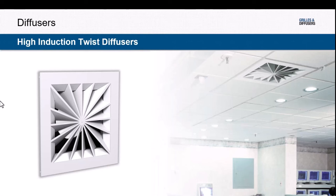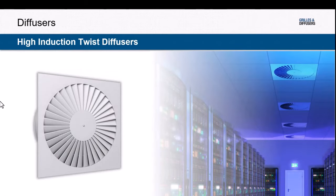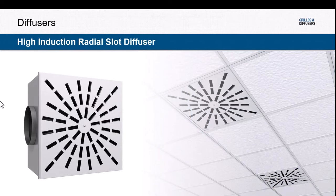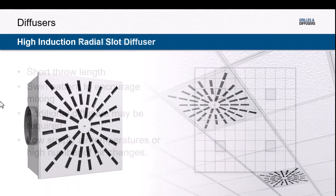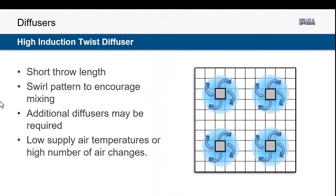High induction twist diffusers are sometimes selected because of their unique appearance, but beyond that they have a very specific throw pattern — a swirl or twist pattern. This type of diffuser ends up with a shorter throw length because of the swirling, turbulent flow, and it encourages mixing within the room. One application is where there are high loads and we're delivering high air volume where shorter throw lengths are desirable. If the supply air temperature has a high delta T, the twist pattern can help get that supply air temperature closer to room air temperature faster.